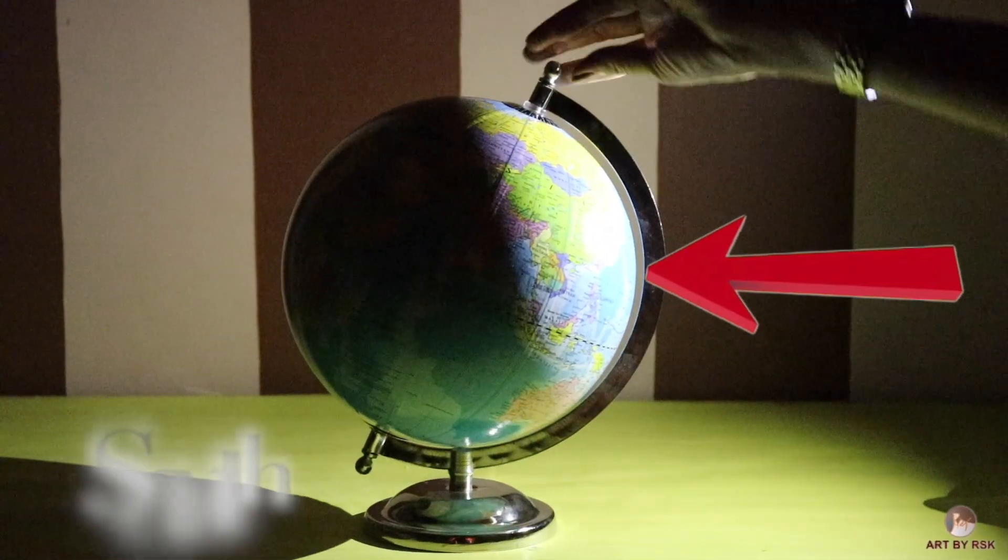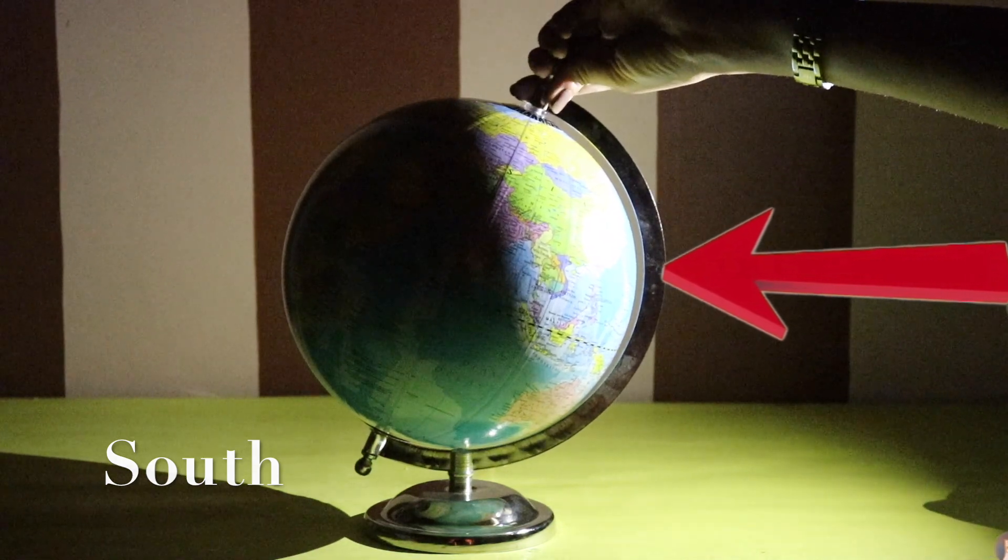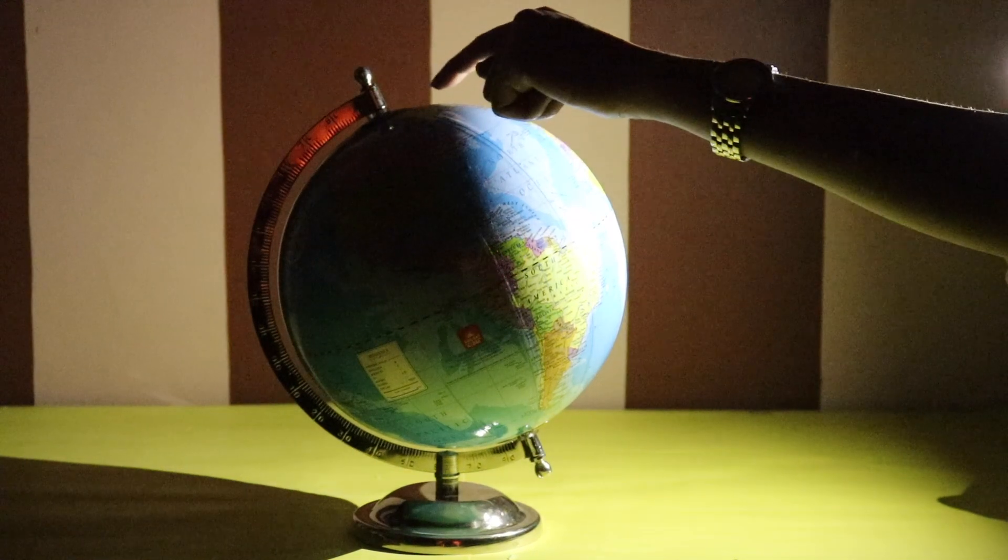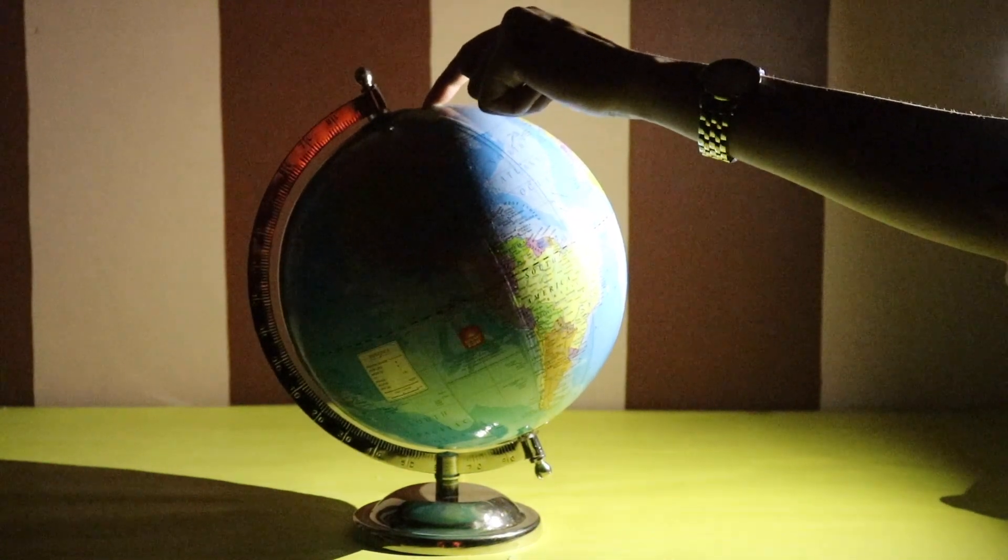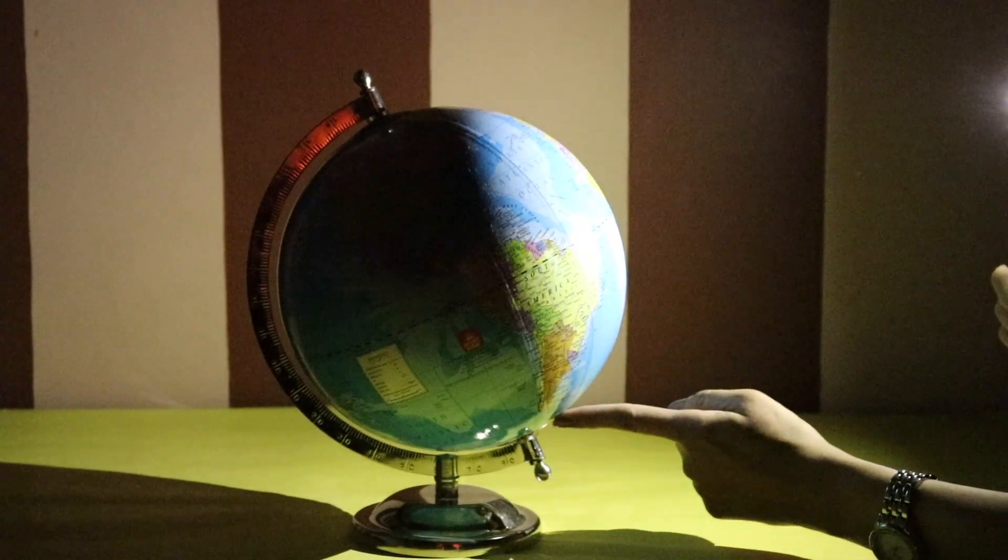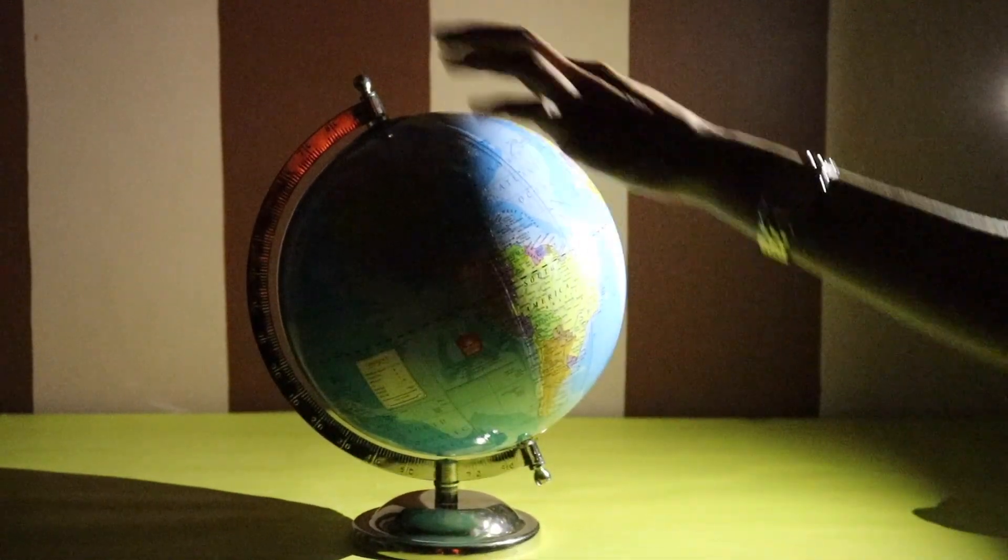And the southern hemisphere receives less light, so it's winter there. When the Earth starts moving, more light is concentrated on the southern hemisphere. That means sunlight is falling directly onto it, so it's summer here. And the northern hemisphere receives less light and becomes cooler.